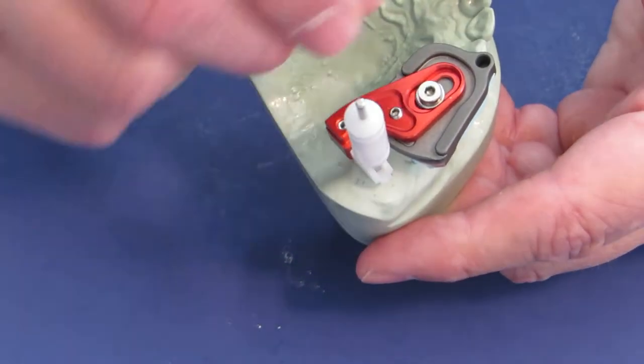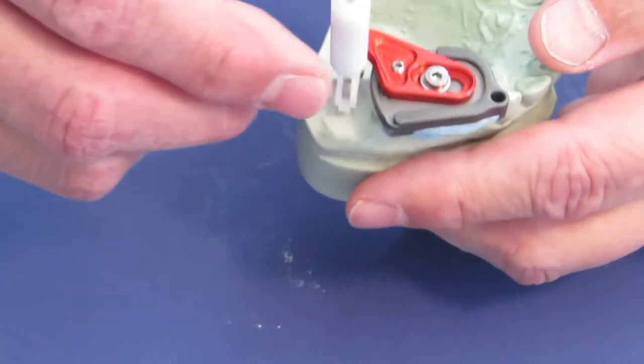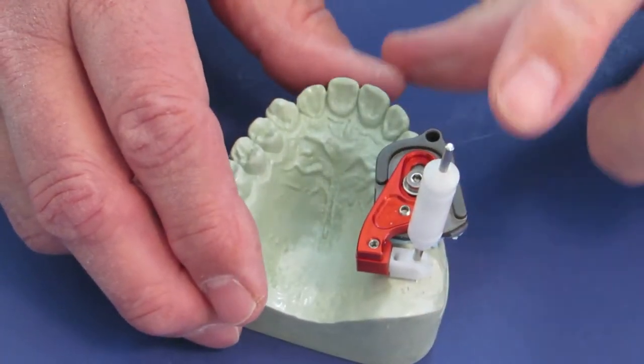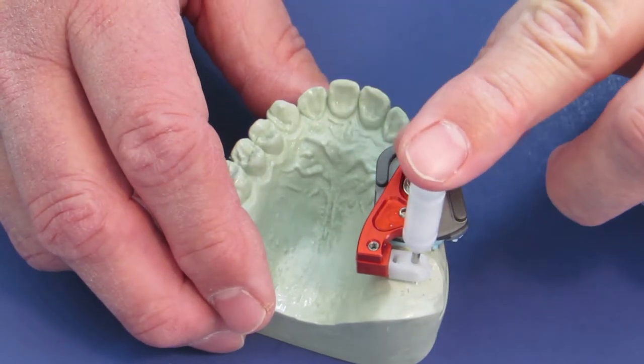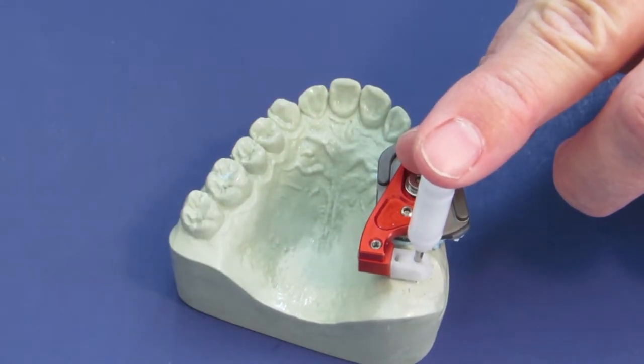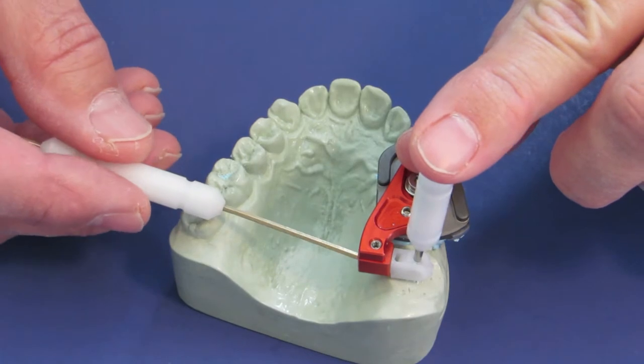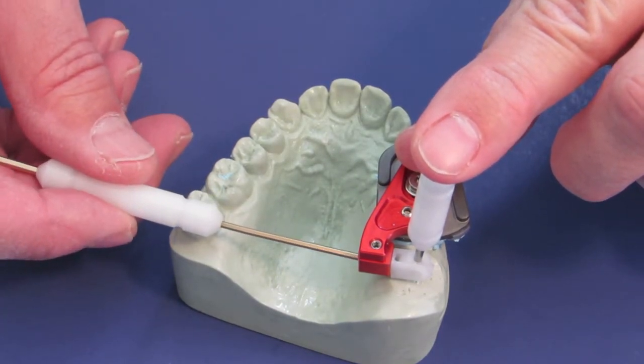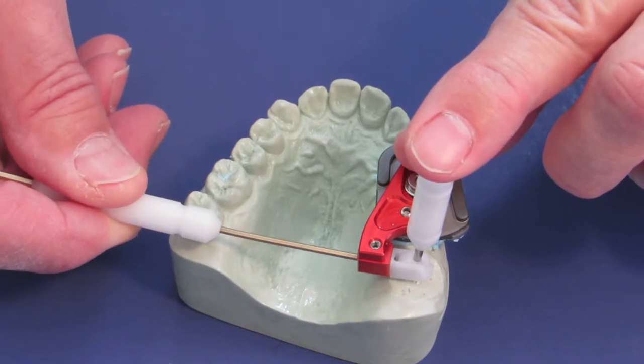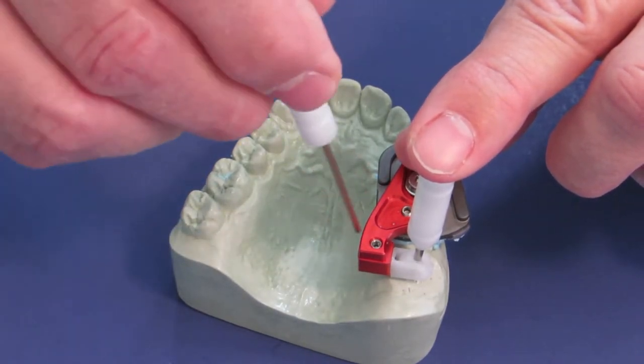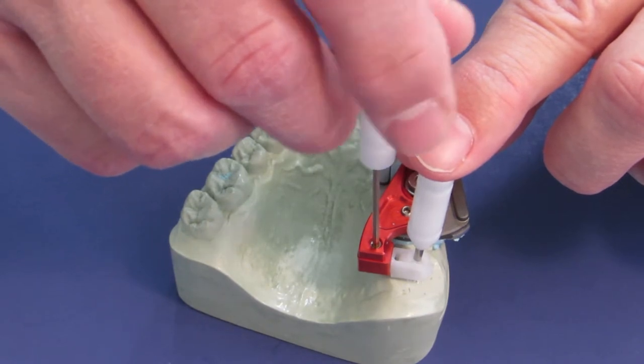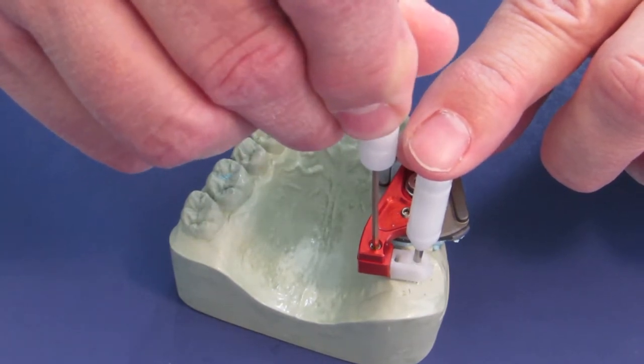Now as I need to move mesial-distal or buccal-lingual, I just line it up when it is in the position that I desire. Then I am going to come into this screw, I twist it until I feel contact and then a quarter of a turn past that. Then I come up to my last adjusting screw, close it until I feel contact and a quarter of a turn.